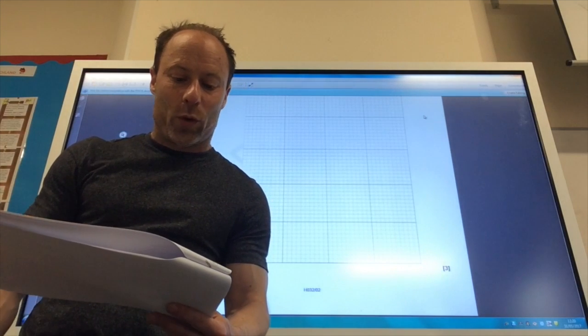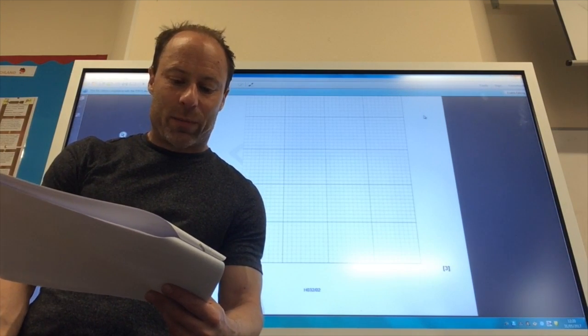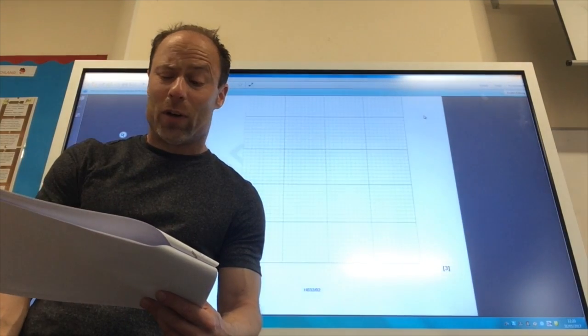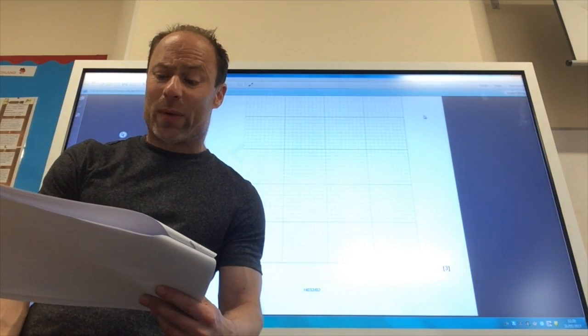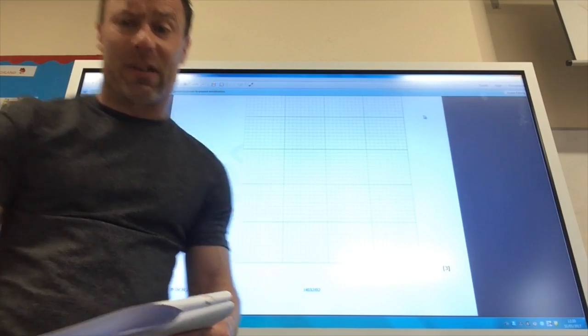Just for the tangent, when you draw that, you should get a value of 9.2 times 10 to the minus 4, but they will accept anything between 8 times 10 to the minus 4 and 1 times 10 to the minus 3.